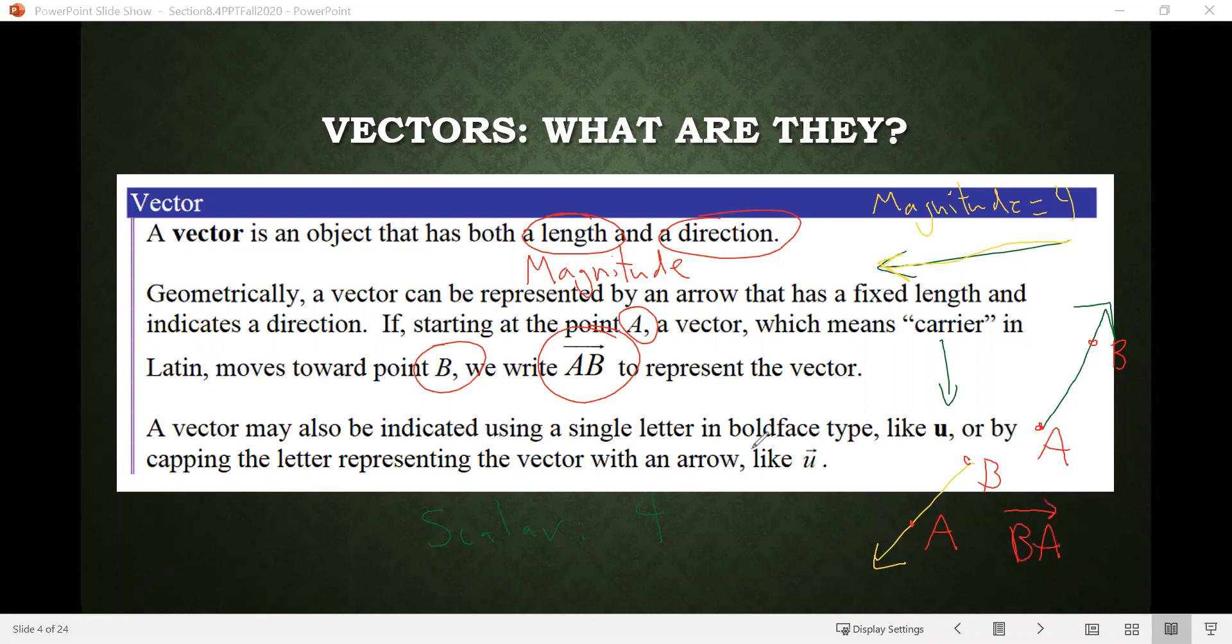Sometimes we also indicate vectors using bolded letters like u or v and w are the most common, although they can be any letter—what's important is the bold. Another common way we'll use them is an italicized letter with a single line over them, so I might have a vector down here in the lower left that looks something like this, and it might be a vector I'm going to call x with a line over it. All different ways we represent vectors, and again the important thing here is they have both the length or a magnitude and a direction.